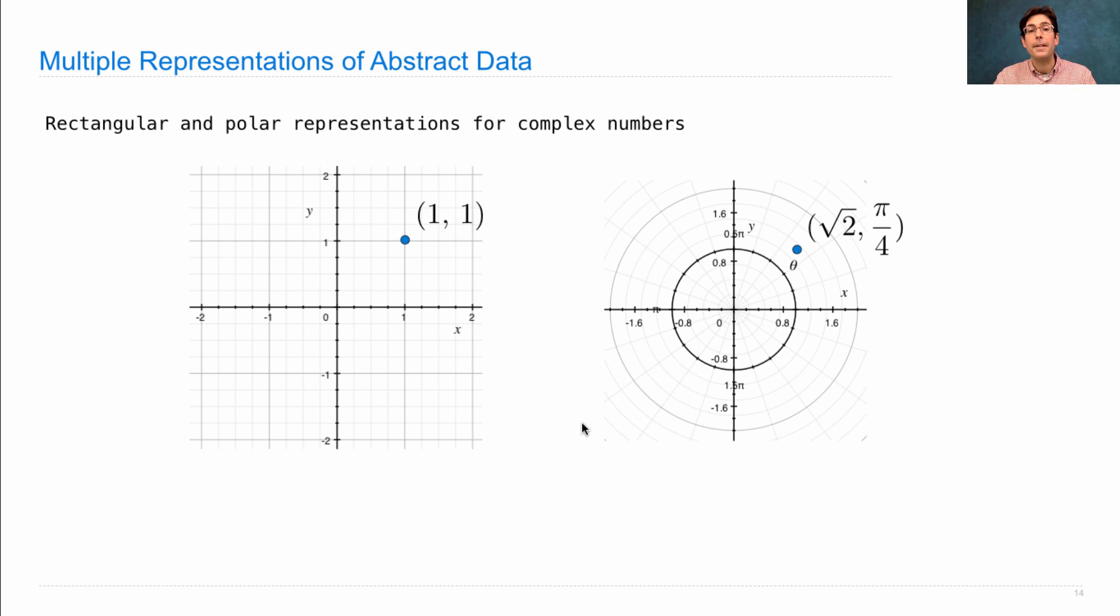So what we have here are two different ways to represent a point on a plane. In this case, the complex plane, where the horizontal axis is real numbers and the vertical axis is imaginary numbers.